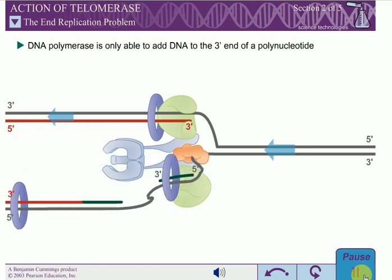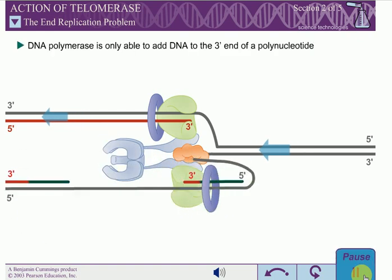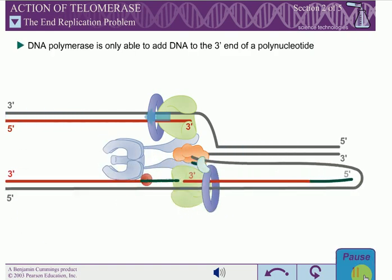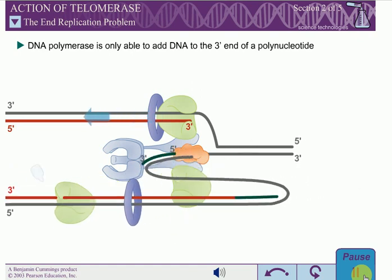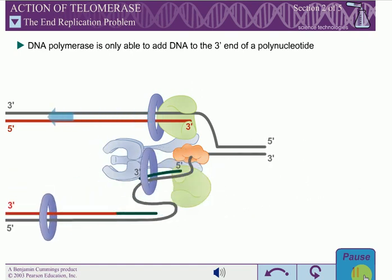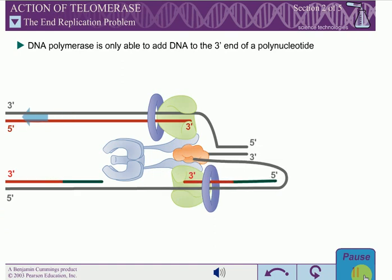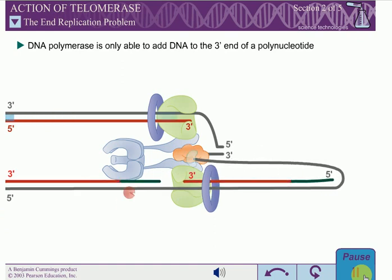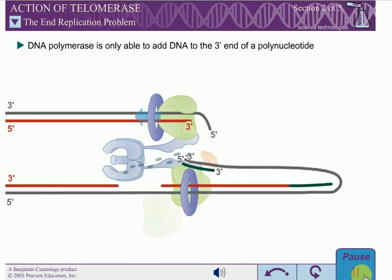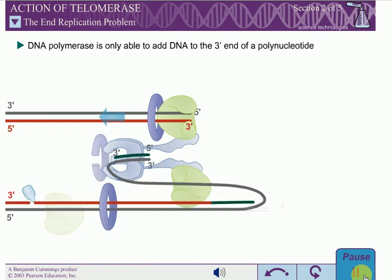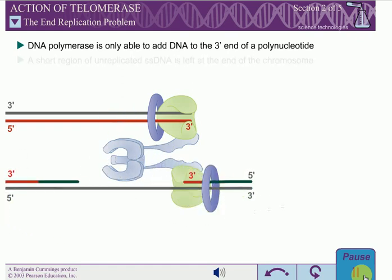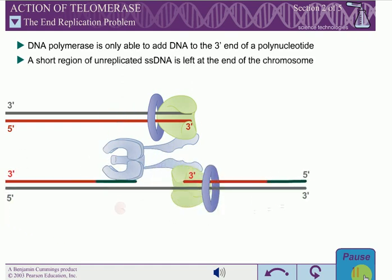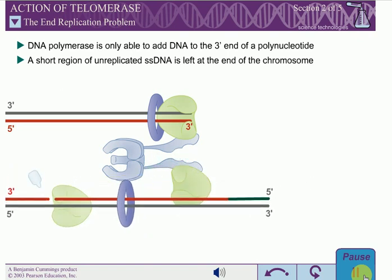However, DNA polymerase is only able to add DNA to the 3' end of a polynucleotide. Therefore, even if primase is able to synthesize an RNA primer at the 3' terminus of the lagging strand, DNA polymerase is not able to replicate this DNA when the primer is removed. This leaves a short region of unreplicated single-stranded DNA at the end of the chromosome.